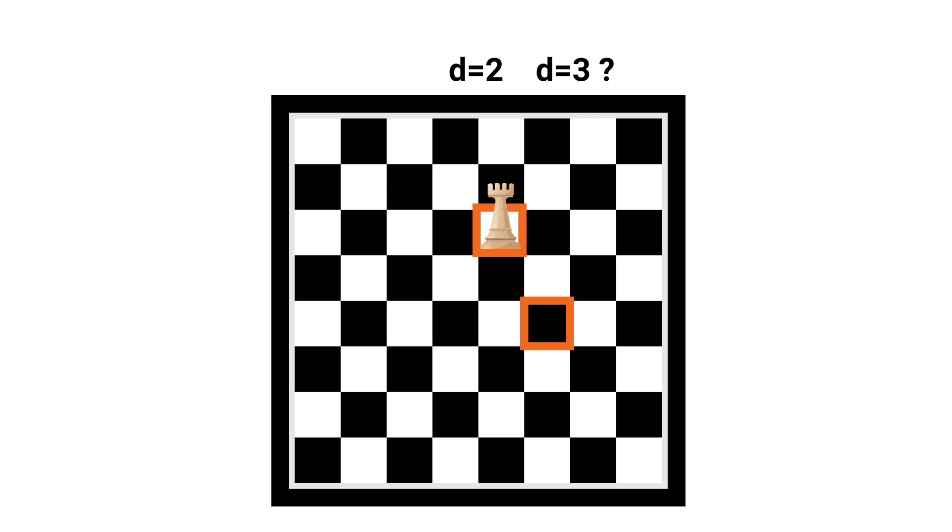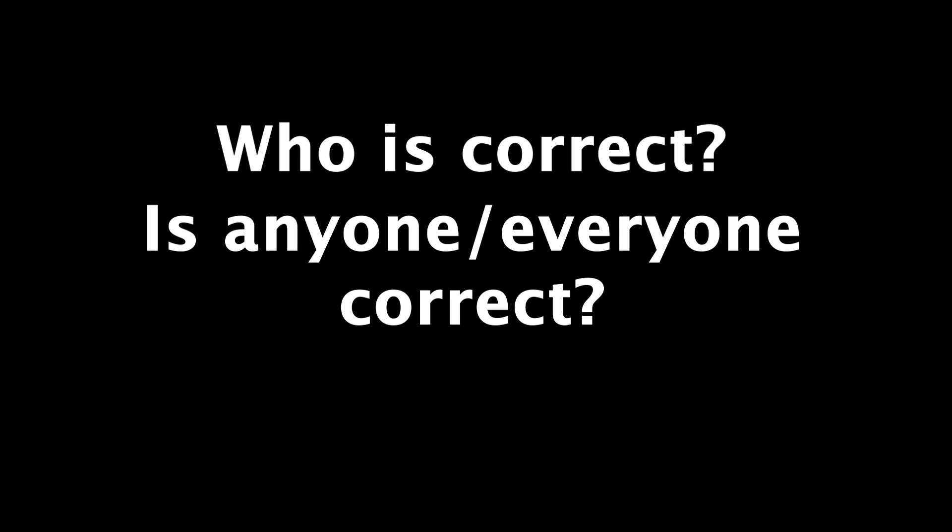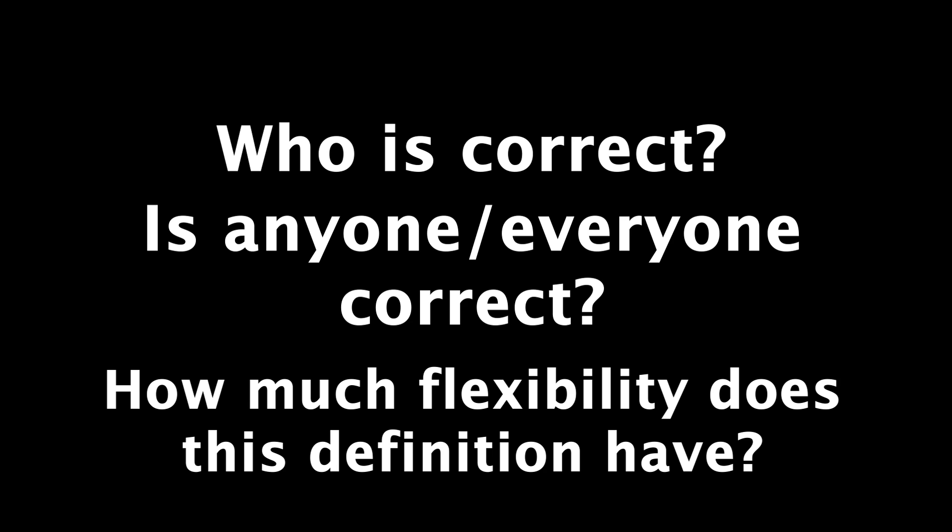That same person would say the distance from this point to this one for the rook is seven, since that's how many squares it will move over. I don't find that super helpful for the rook, but still, however someone defines distance, it's fair to ask, who's correct? Is anyone correct? And how much flexibility do we have here?